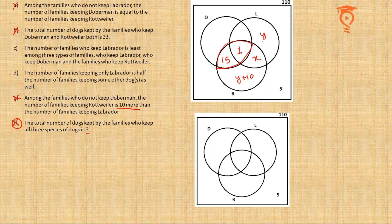Point A: among families who do not keep Labrador — covering the regions with 15, y+10, and the blank one — the number keeping Doberman equals the number keeping Rottweiler. Rottweilers in that region sum to y+25, so I write y+10 in the Doberman-only (non-Labrador) position to make the Doberman count y+25 as well.